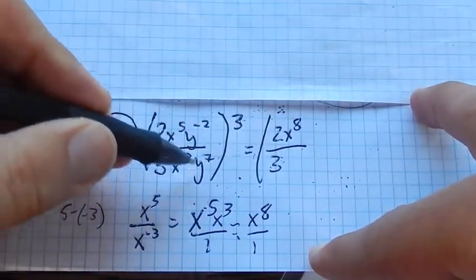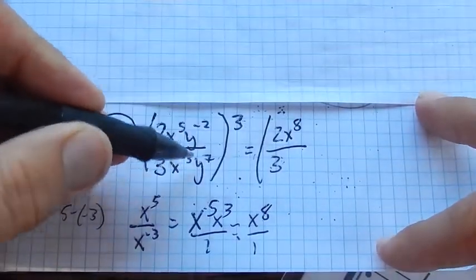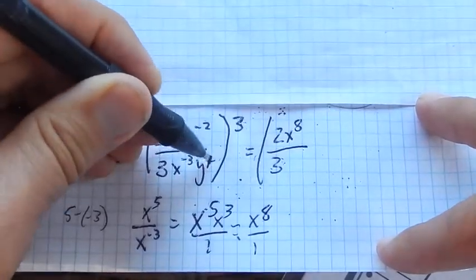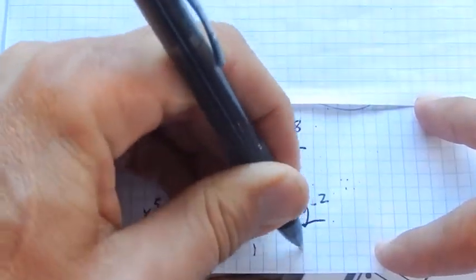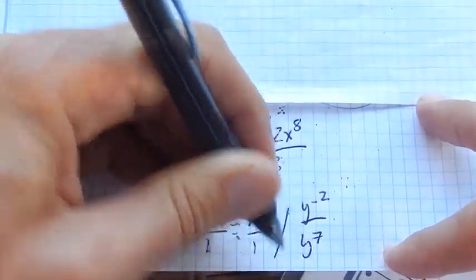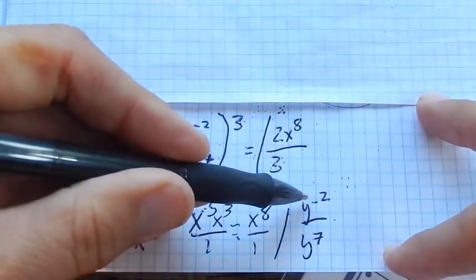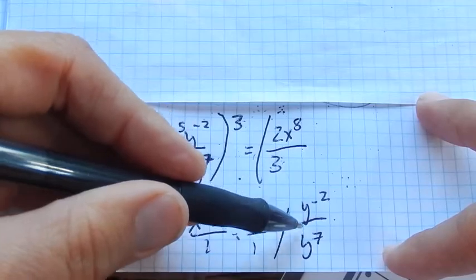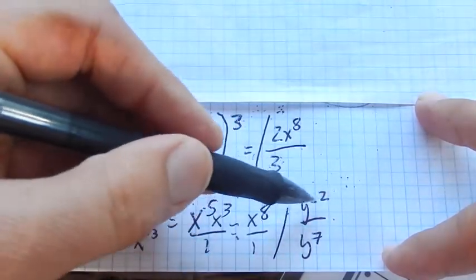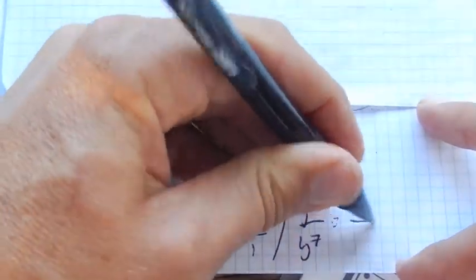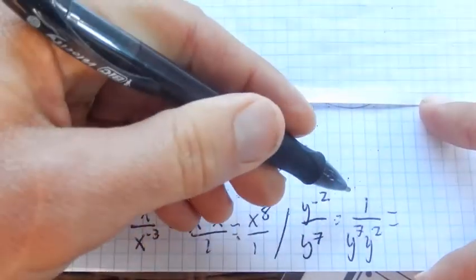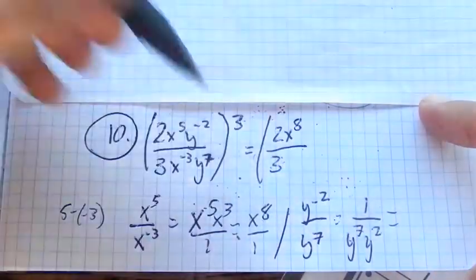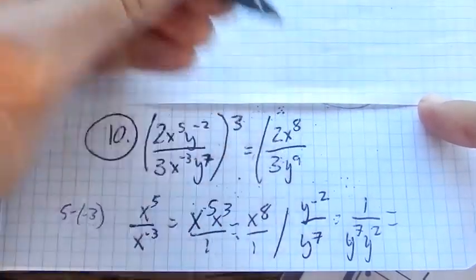Let's do it with these y's. Same sort of thinking. y to the negative two over y to the seventh. Again, negative exponents take the reciprocal, they switch where that's at in the fraction. So it's going to push that y squared to the bottom, which is one over y to the ninth. So now I'm going to have a y to the ninth in the denominator.